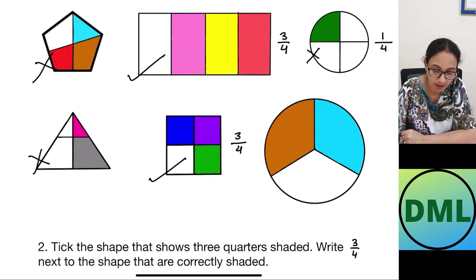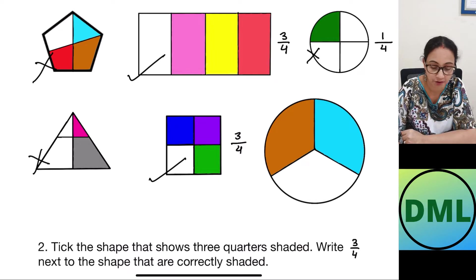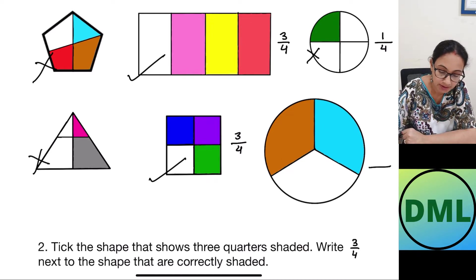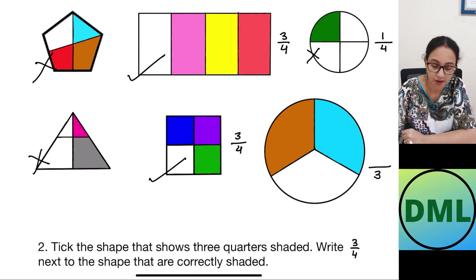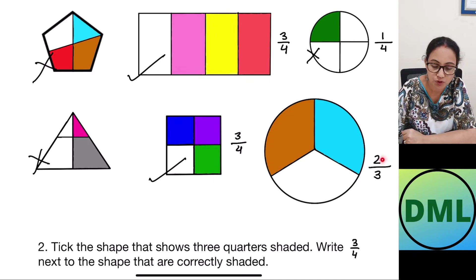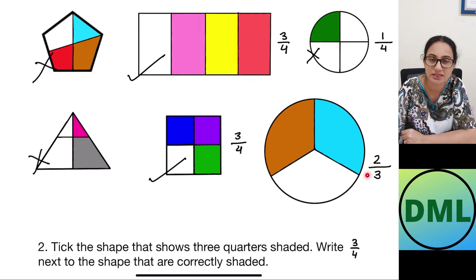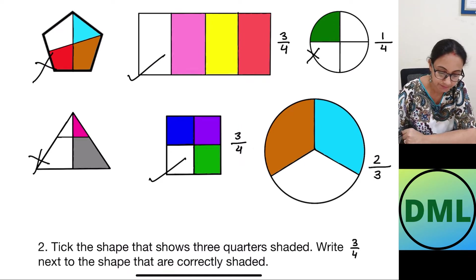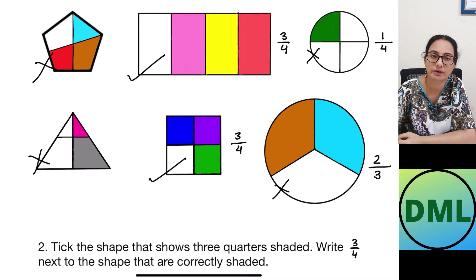Let's look at the next figure — this is the circle. How many parts has it been divided into? One, two, and three parts. Are the parts equal? Yes, but I am looking for three by four. This shape has been divided into three parts, so three comes in the denominator. Two parts are shaded, so this shape is two by three — not three by four. This is not my answer.